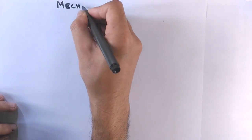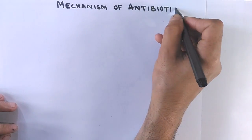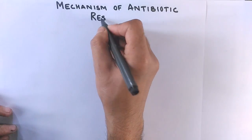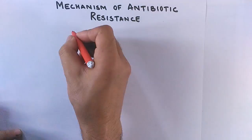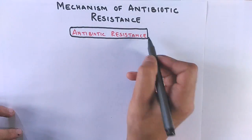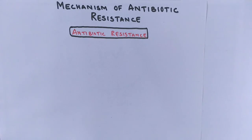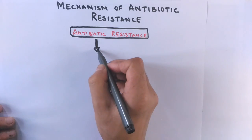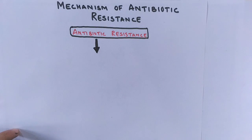Hello friends, in the previous video we discussed about antibiotic resistance — its overview, how it occurs and when it occurs. Now in this video we'll be discussing the mechanism behind it. As we know, antibiotic resistance occurs due to overuse of drugs, and the final molding for resistance is given by natural selection, as we have already discussed the evolution part of antibiotic resistance in the previous video.